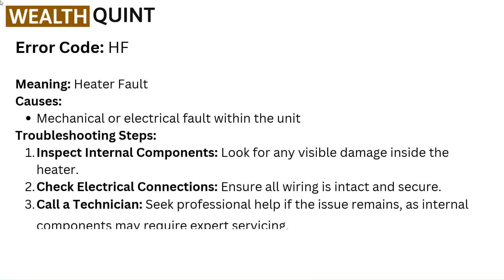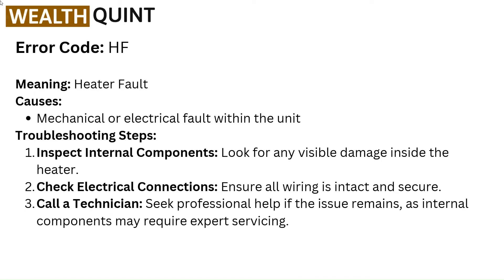Error code HF — meaning Heater Fault. Causes: mechanical or electrical fault within the unit. Troubleshooting steps: Inspect internal components — look for any visible damage inside the heater. Check electrical connections — ensure all wiring is intact and secure. Call a technician — seek professional help if the issue remains, as internal components may require expert servicing.